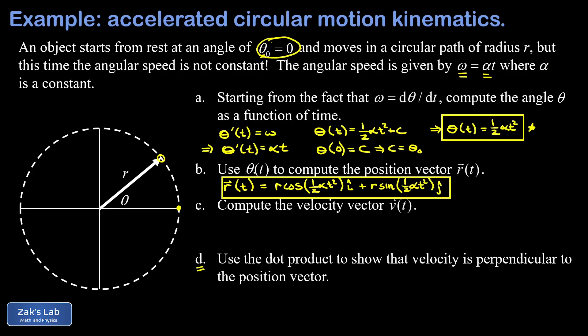Then we're asked to compute the velocity vector based on this position vector. That's just a time derivative of the vector, which is nothing more than the time derivative of the components. I have to differentiate this first component, r cosine one-half alpha t squared, and that requires the chain rule.